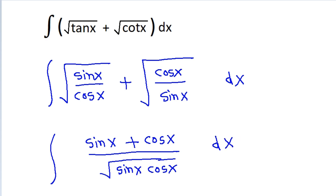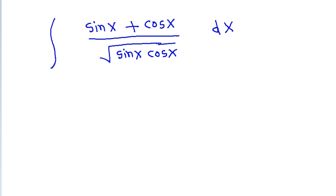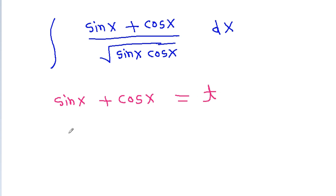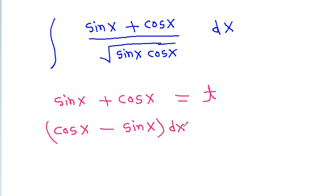Now, here if we take sin x plus cos x as t, then we get cos x minus sin x dx equal to dt. But we don't have cos x minus sin x into dx, so it will not work.